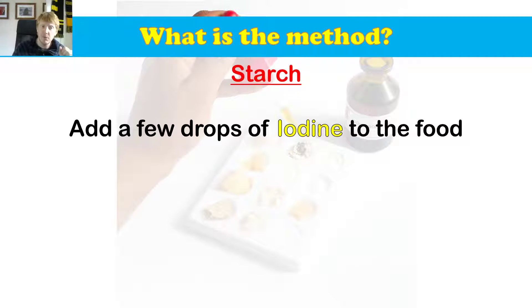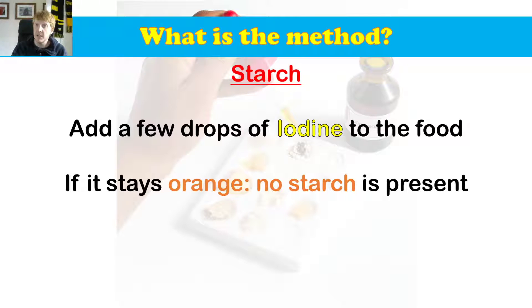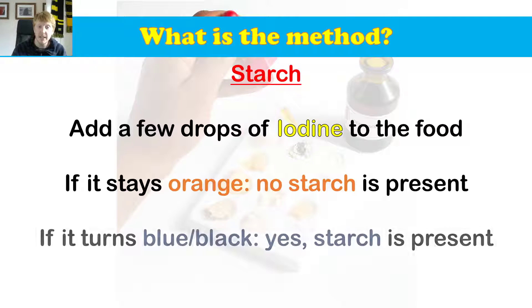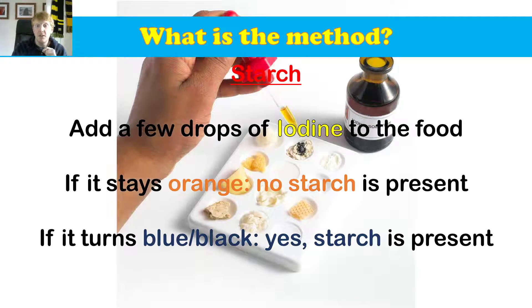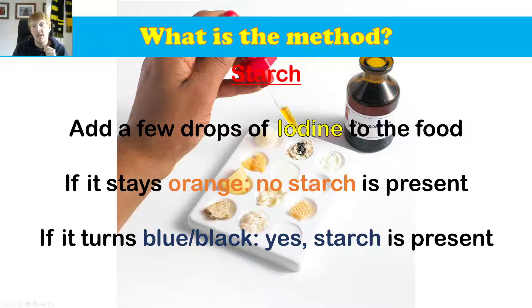What about starch? We've done this if you've watched the Enzymes RPA. You add a few drops of iodine to the food. If it stays orange, no starch is present — that's just the color of the iodine. If it turns a blue-black color, then starch is present. You can see this black color under the iodine now, and that blue-black color means starch is present.